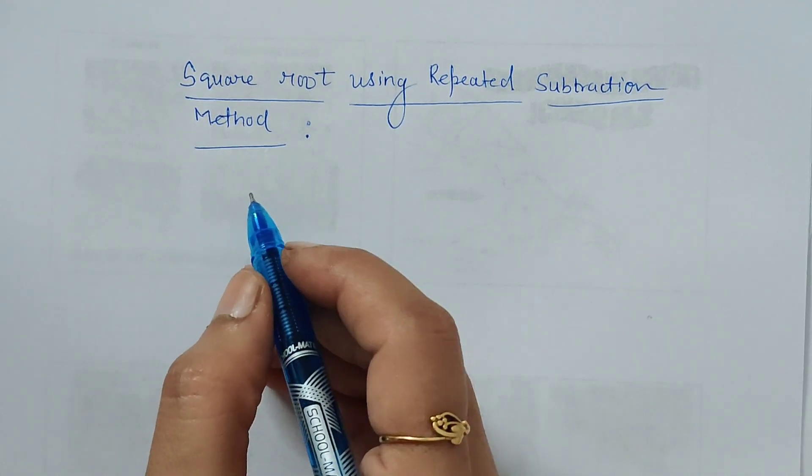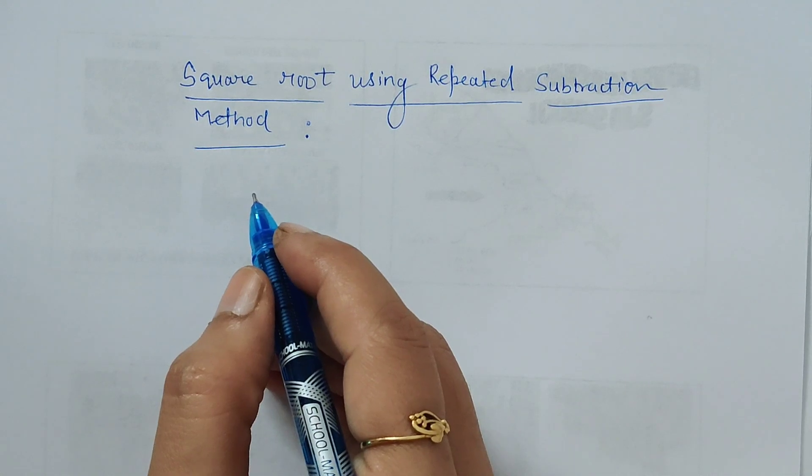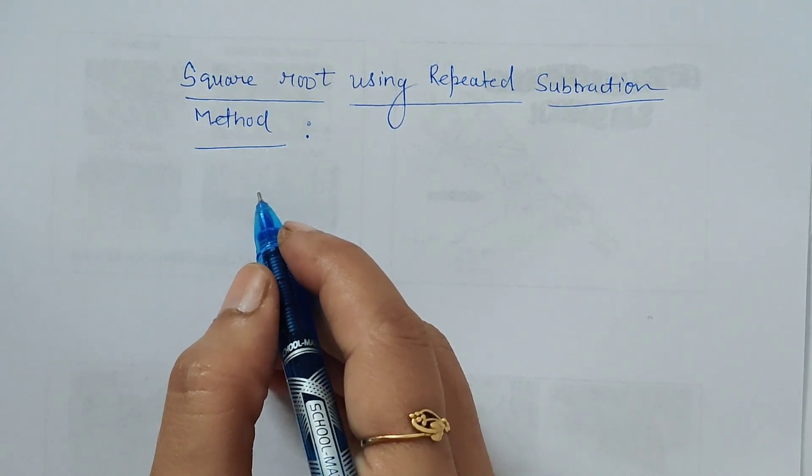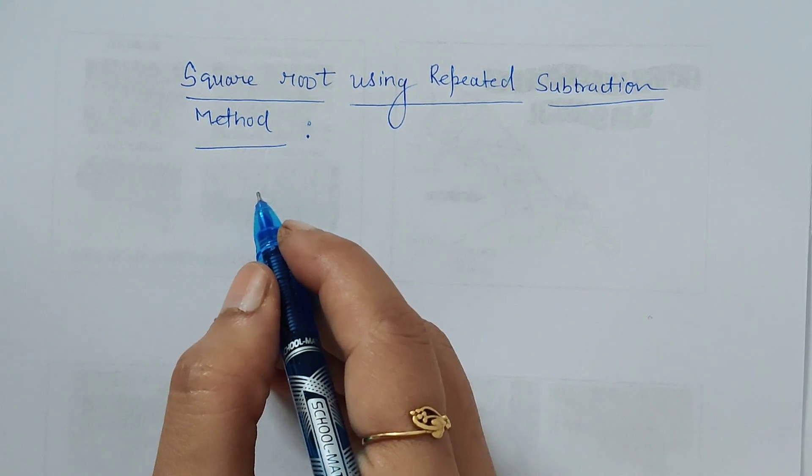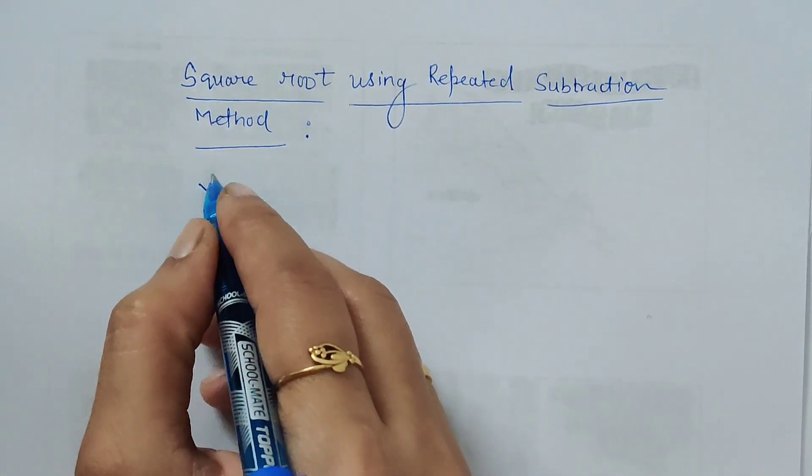Welcome again. Today we will be solving square root using repeated subtraction method, where we just have to keep subtracting successive odd numbers from the given number whose square root is to be calculated.